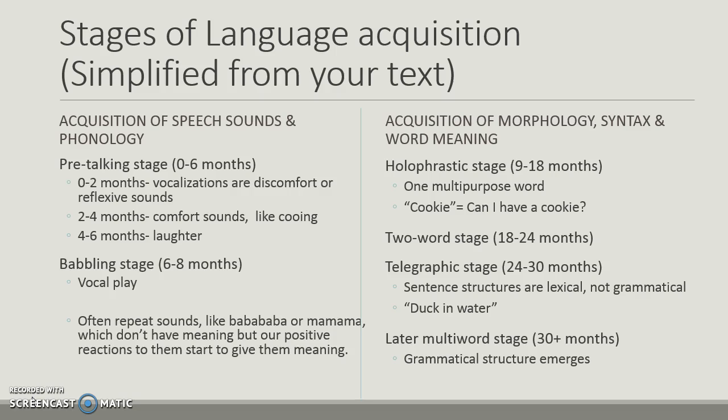The babbling stage is six to eight months — vocal play. We often repeat sounds like ba-ba-ba and ma-ma-ma, which don't have meaning to the child. But positive reactions to these noises start to give them meaning. Think mama and papa or dada. The parents will hear these sounds and have a very positive reaction, which the child realizes is a good thing, so they'll keep making these sounds.